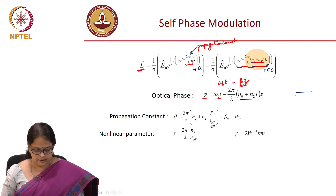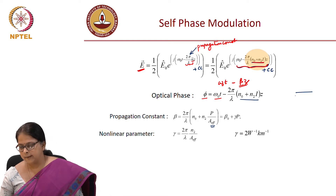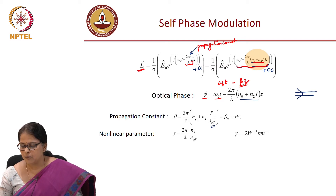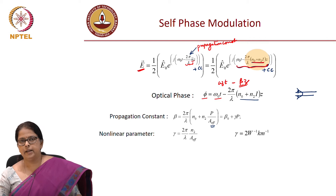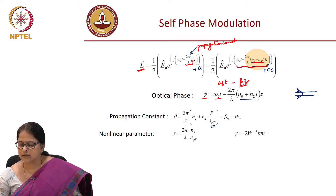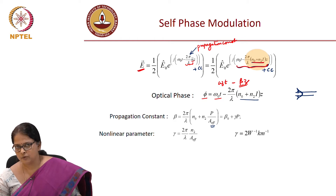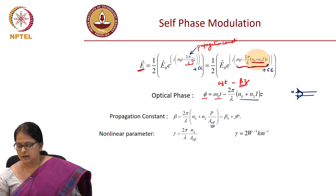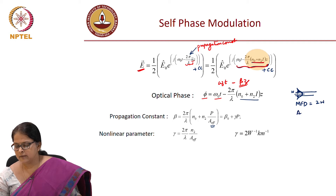Note that this effective area is not the core area. It is the effective area of the mode of the fiber, because the entire core does not see the same intensity. There is a specific transverse profile for the fundamental mode of the fiber. If w is the spot size, the mode field diameter is 2w, and the effective area can be written as A_eff = π·w².